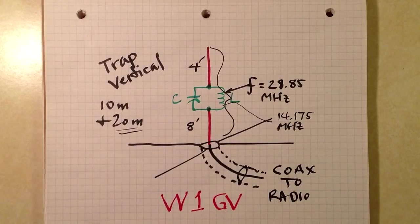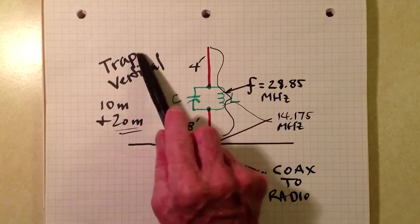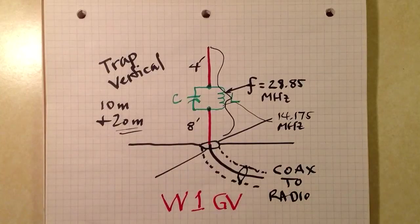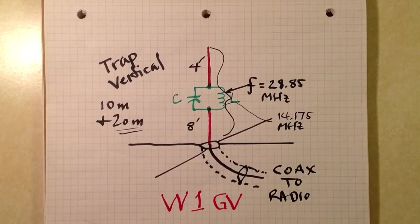Stan Gibalisco here to describe how an antenna trap works. Have you ever heard of an antenna trap? For example, a trap vertical. If you read QST magazine, you've doubtless seen advertisements for trap verticals. They're a popular type of antenna on ham radio bands because you can easily make them work on multiple bands without having to switch anything.